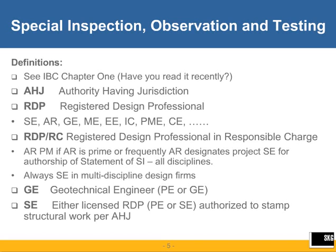AHJ is the Authority Having Jurisdiction. Registered Design Professional — that's us for a lot of the people on the phone, or the engineers you hire for your design services. Could be a structural engineer, an architect, a geotech, and so forth. So somebody designated in your jurisdiction as an RDP, which is similar to an engineer or architect of record, only it's the person taking responsibility for the statement of special inspection plan.